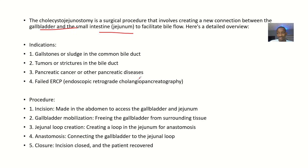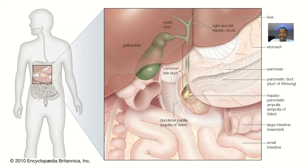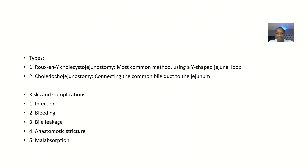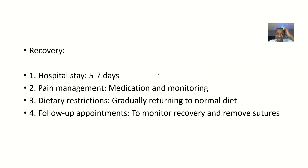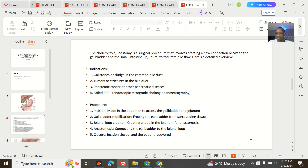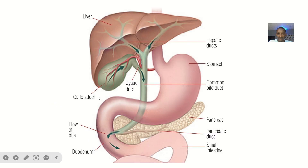So maybe there's a surgery and there's a need to create a fresh communication between the gallbladder and the small intestine. Here you see this is the gallbladder, and this is the small intestine — you are trying to link these two structures together to enable bile flow. We'll look at the indications, the procedure, the types, risk factors, and the possible recovery time.